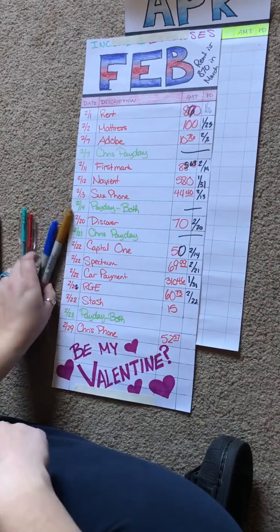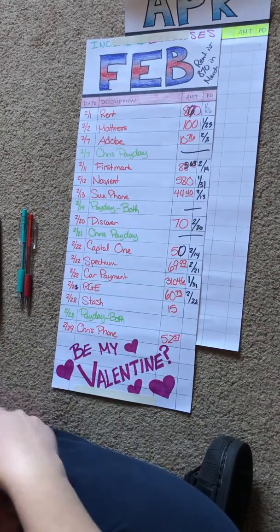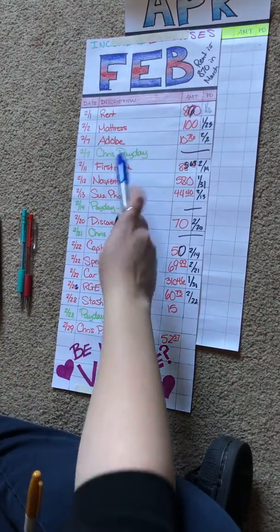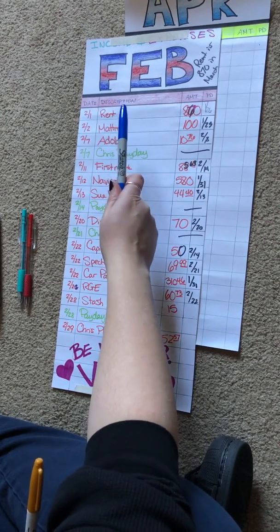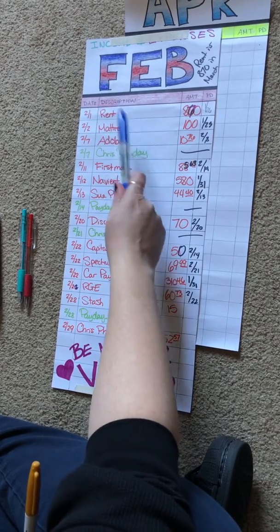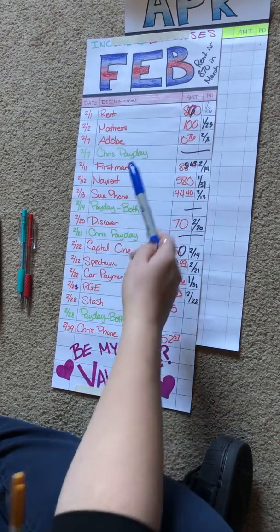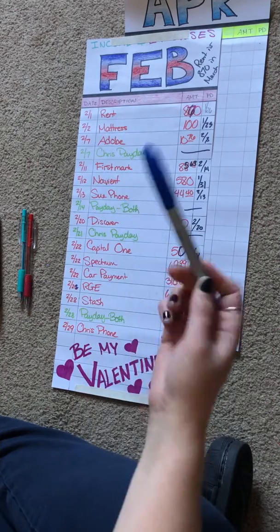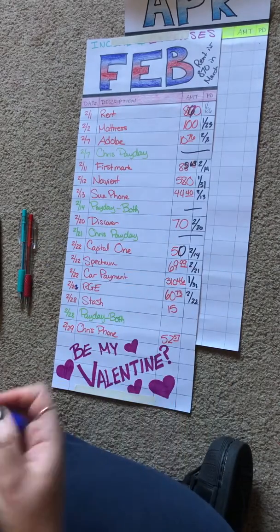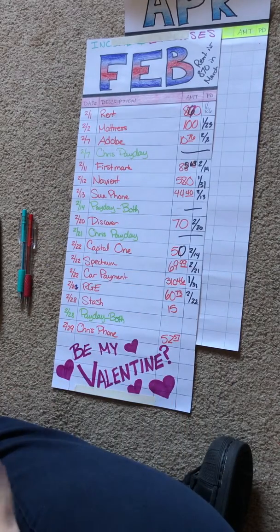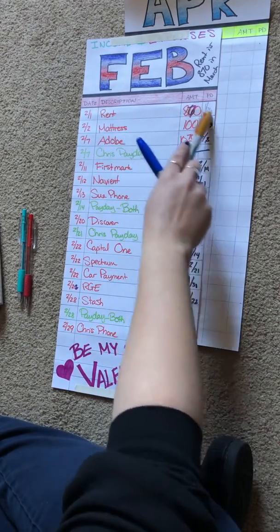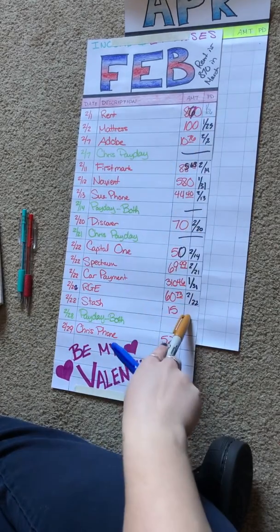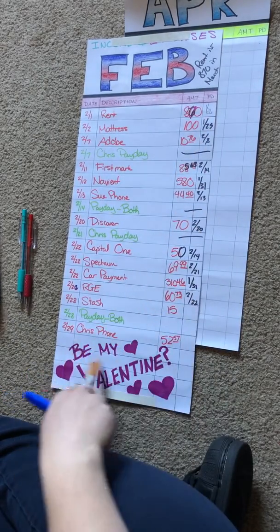You can see the usual system here — there's an orange or red for things that come out of our account and there's green or blue for income. And so this is when everything was paid for the month.